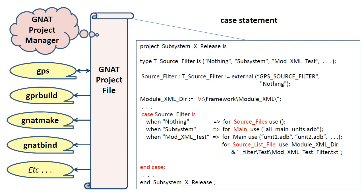The case statement uses a scenario variable to select a branch. In the case of nothing, the attribute source_files contains the empty set, so the project contains no source code. The subsystem case loads all source files and identifies all available test programs in the procedure all_main_units, which is generated by a script. The main attribute allows us to list all main programs of interest. In the case of a subsystem, we use an indirect approach by specifying a main program containing a list of all main programs, within a procedure that only executes a null statement. If the attribute source_files or source_list_file is not specified, then all units located in the directories listed by source_tiers will be found, loaded, and displayed.